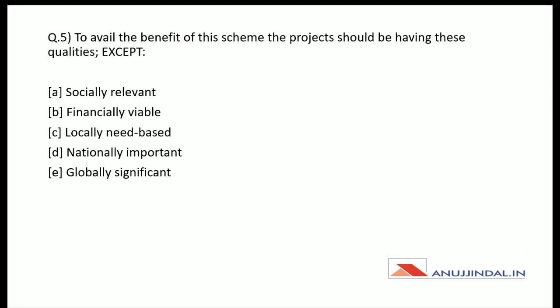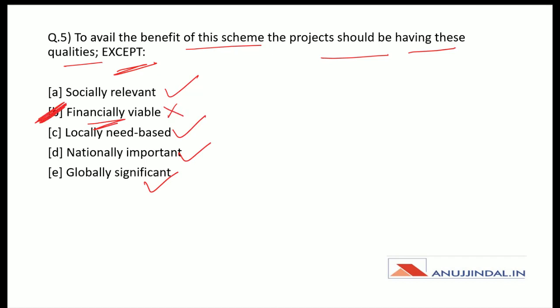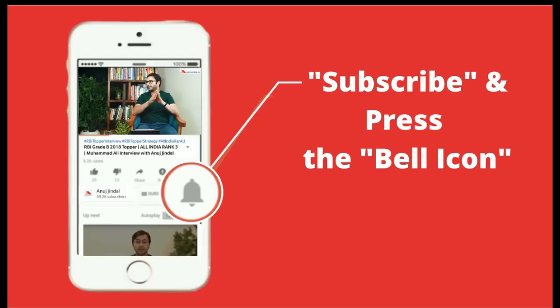Question number five: To avail the benefits of this scheme, the projects should have these qualities except which one? The project should be socially relevant, locally need-based, nationally important, and globally significant. The option 'financially viable' is not among the required project qualities. So the correct answer is option B — financially viable is not a required criterion.